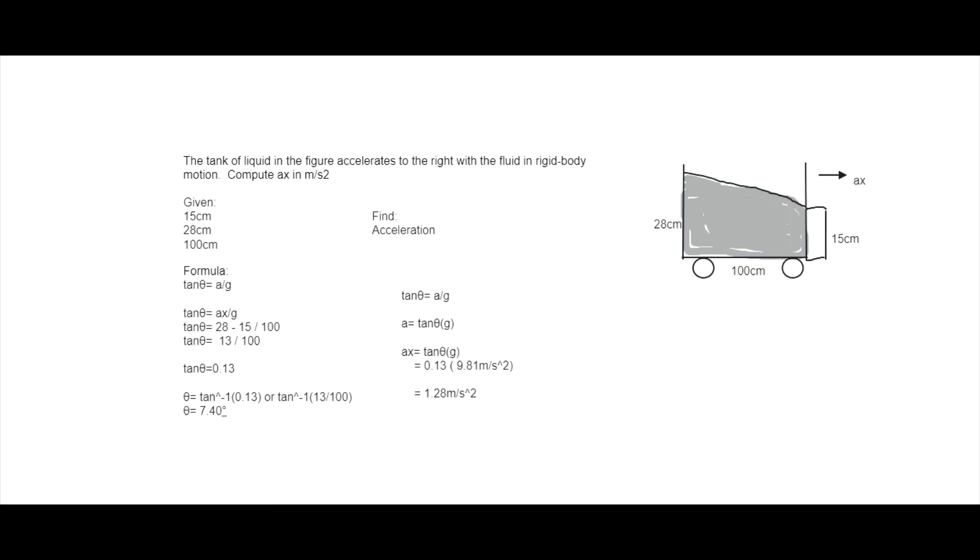Then to find the acceleration, we're going to use the same formula. The tan theta equals acceleration over gravity. Then we're going to multiply both sides by gravity so that we can cancel it, so that the remaining one will be the acceleration.